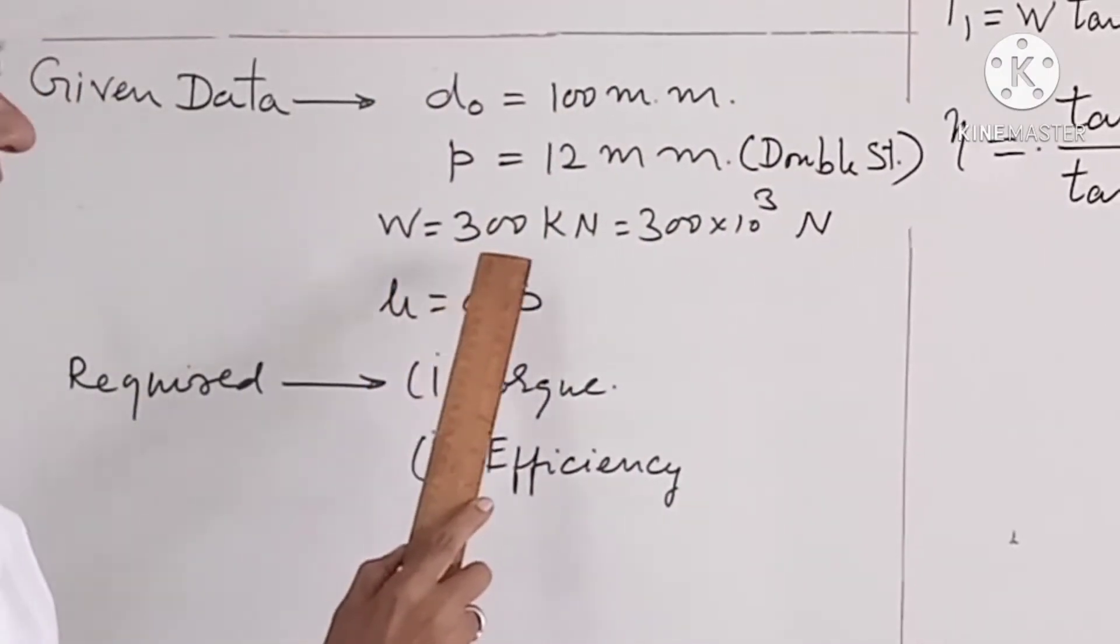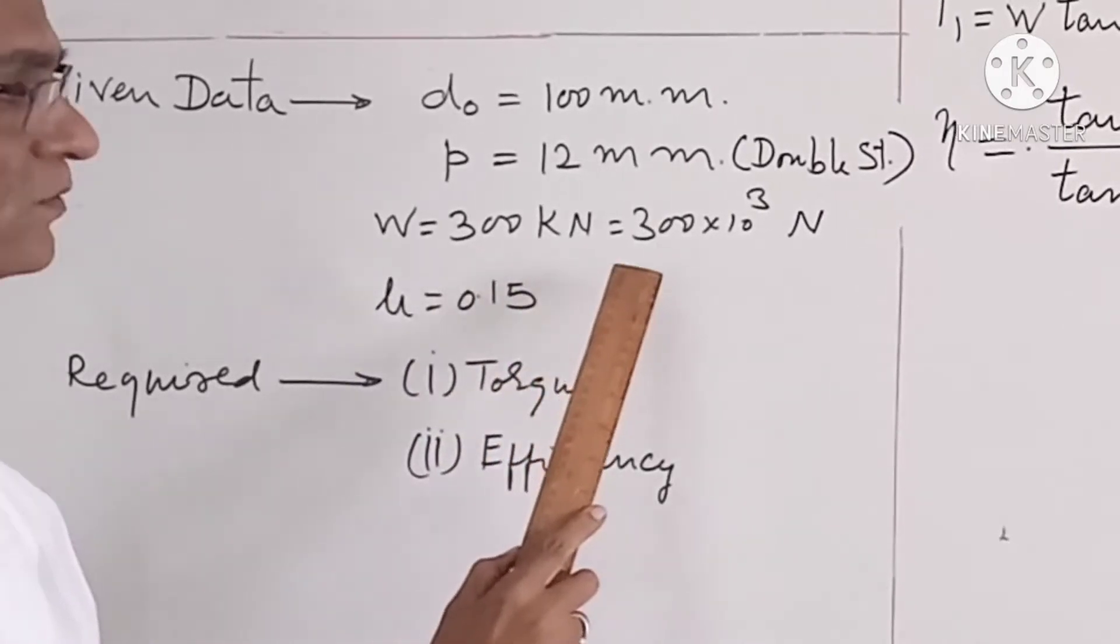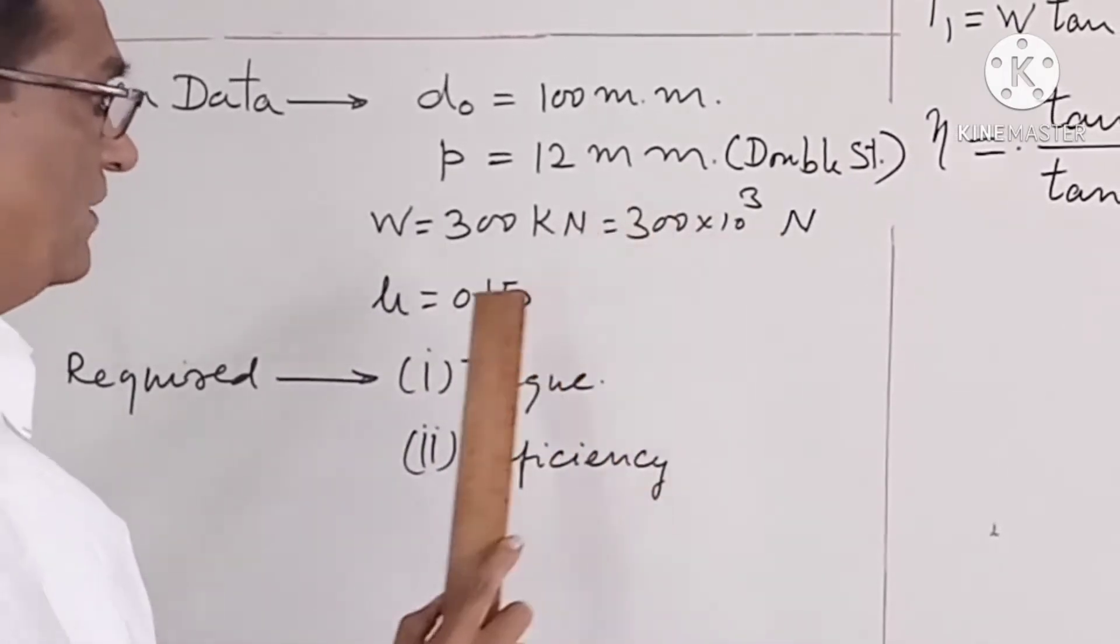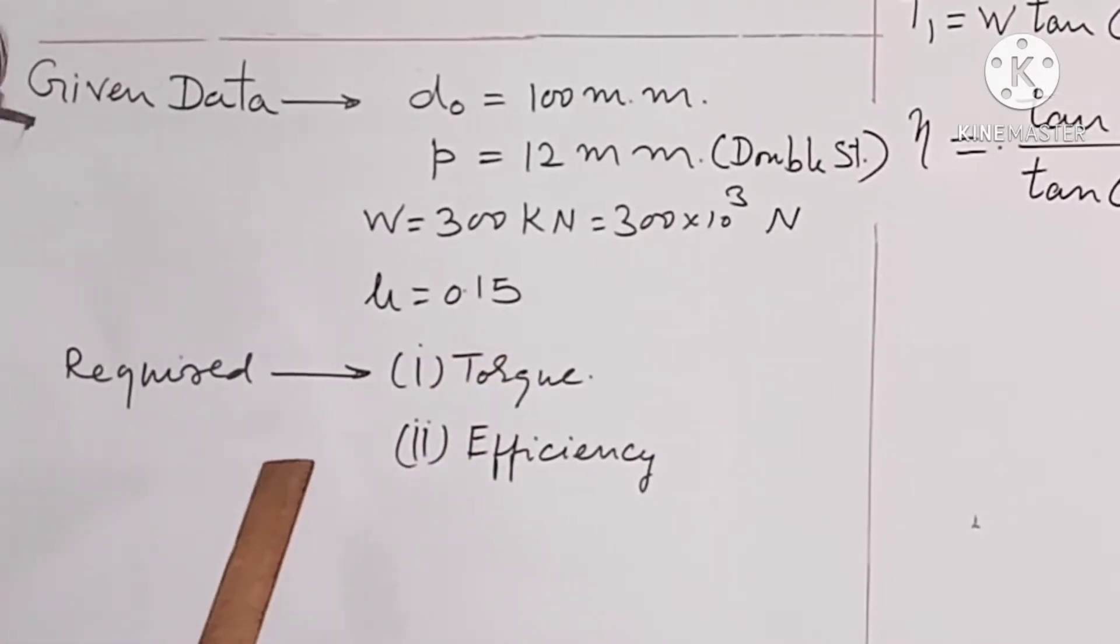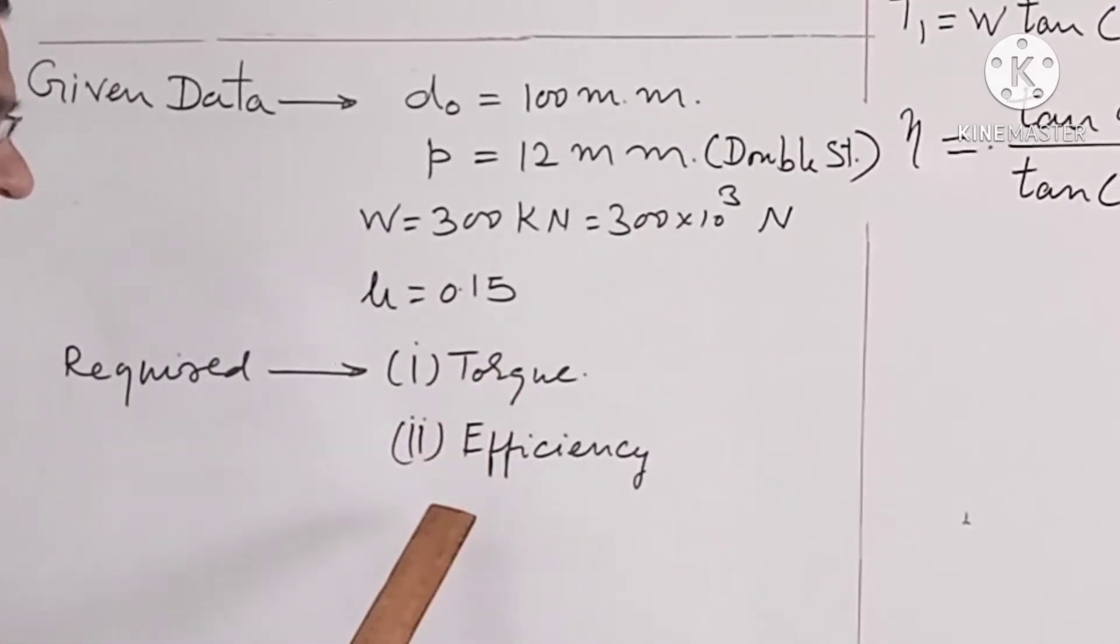W = 300 kN = 300 × 10³ N, μ = 0.15, and the required values are torque and efficiency.